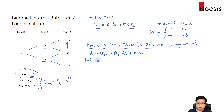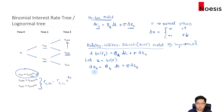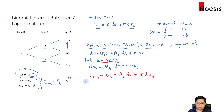We let u equal the natural log of r, so the equation becomes du sub t equals theta sub t dt plus sigma dz sub t. Using a discrete approximation, we express du sub t as u sub t+1 minus u sub t equals theta sub t dt plus sigma dz sub t. Substituting back, we have: ln(r sub t+1) minus ln(r sub t) equals theta sub t dt plus sigma dz sub t.